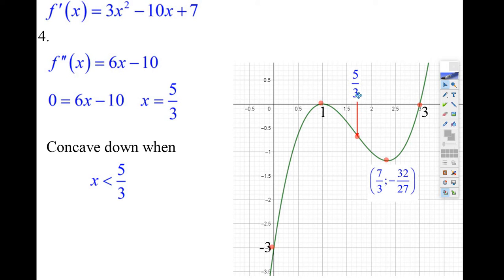That's right at that point at 5 over 3, it changes concavity. So it's concave down to the left here, but it's concave up when it's greater than 5 over 3. So when is it concave down? The answer is when x is less than 5 over 3, then the function is concave down.